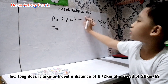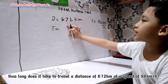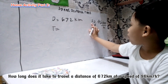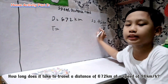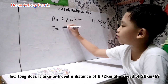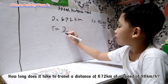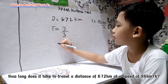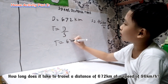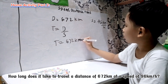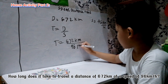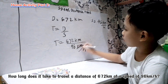We are asked for time. Our given distance is 672 km and our speed is 96 km per hour. The formula for time is dividing distance traveled by speed. Let's substitute our given: 672 km divided by 96 km per hour.